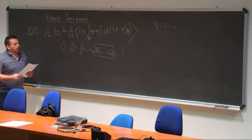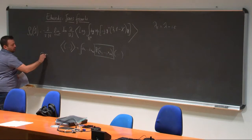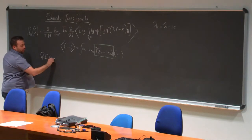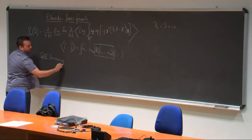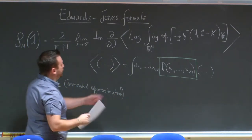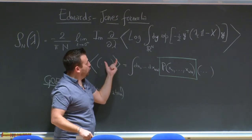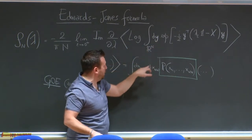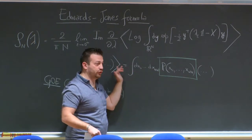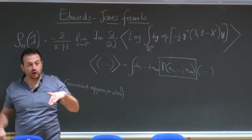Yesterday we performed this calculation for the GOE — the ensemble of Gaussian real symmetric matrices — in the annealed approximation. The annealed approximation means, in essence, that we are moving this logarithm outside of the average. So we are taking the logarithm of a multiple integral of dy and dx variables on the same footing. This is clearly an approximation, but we showed yesterday that, perhaps surprisingly, we landed on the correct solution.